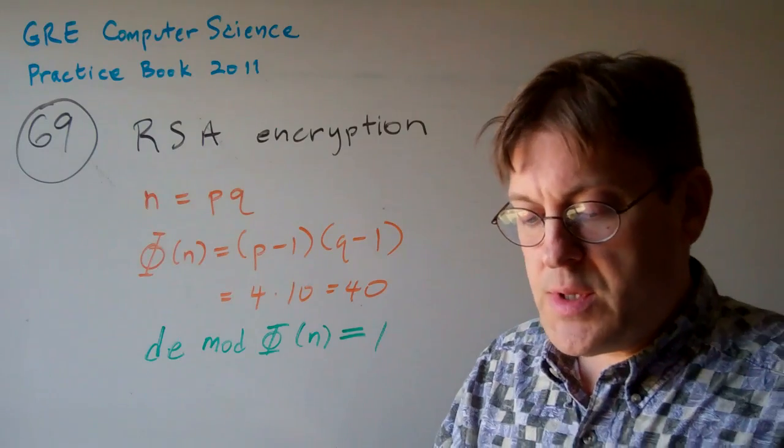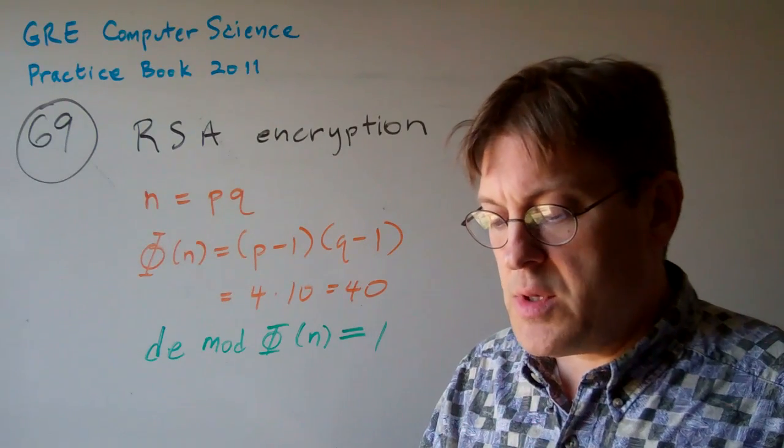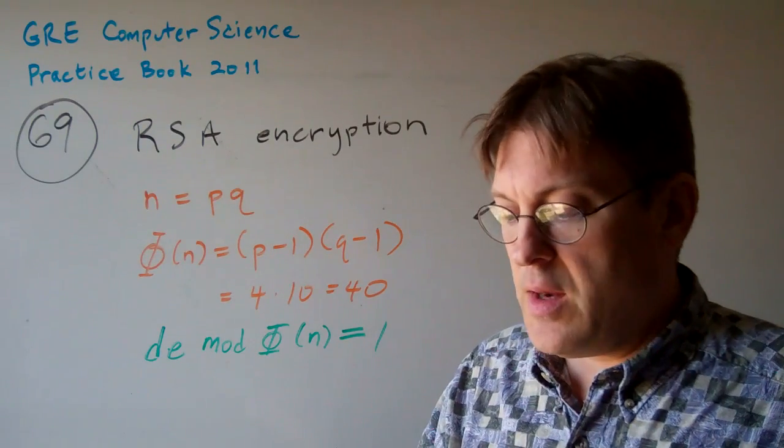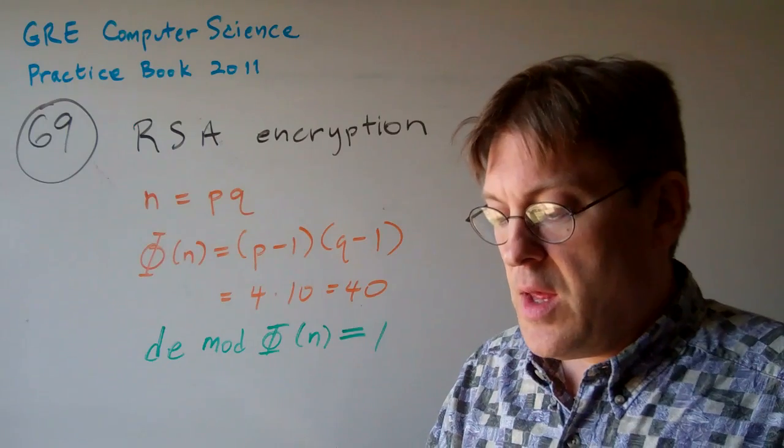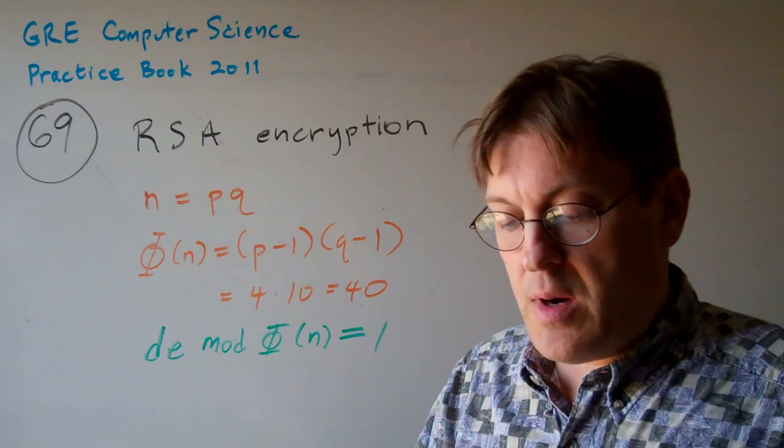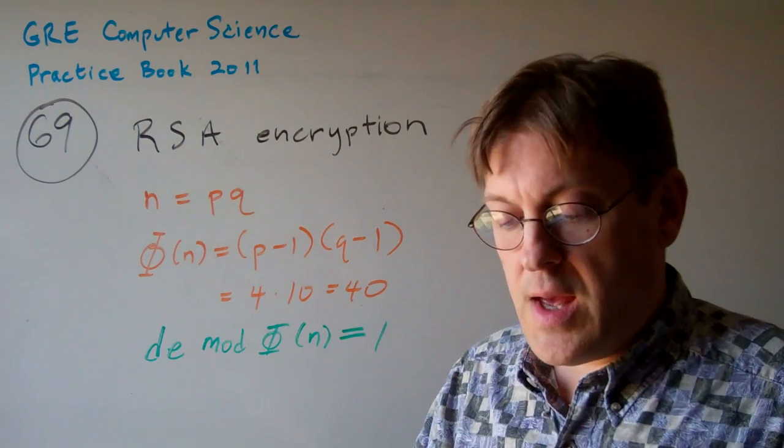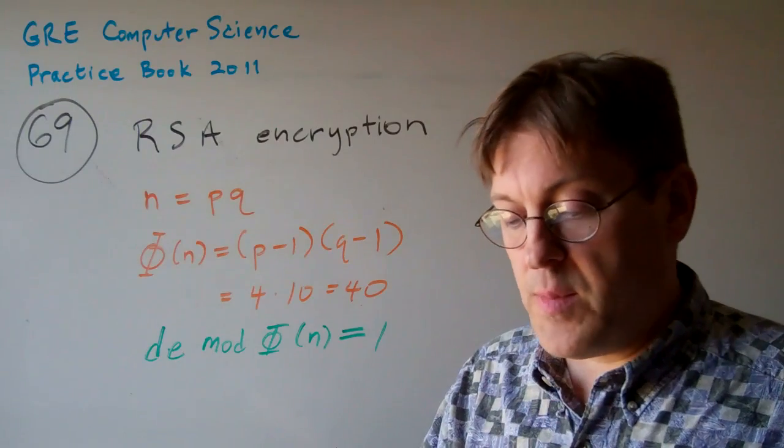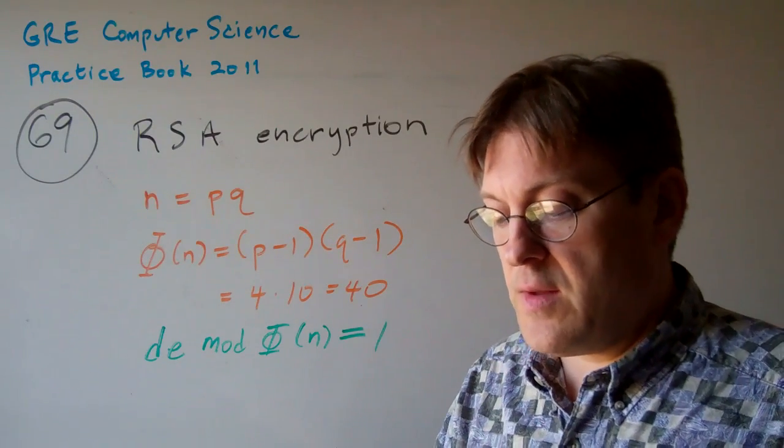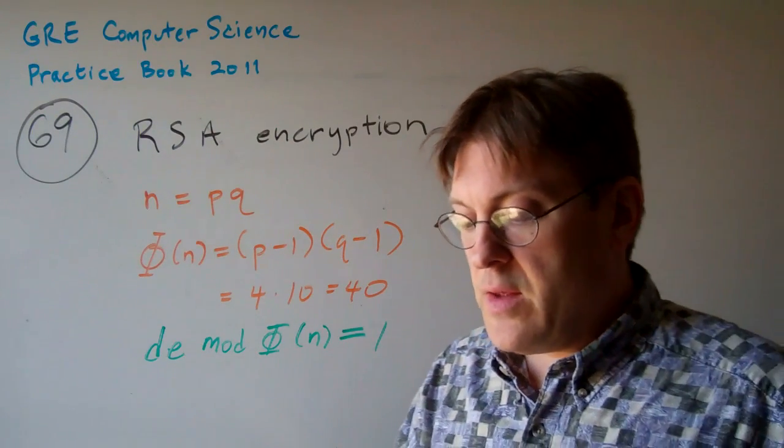Question 69. Suppose that in RSA encryption, the public encryption key pair is E,N, which is 3,55, and the private decryption key pair is D,N, where we don't know what D is, but N is still 55, and D is less than N. What's the value of D?